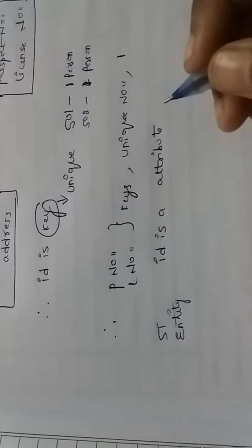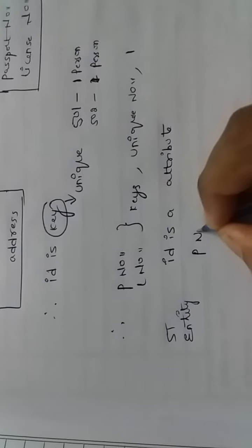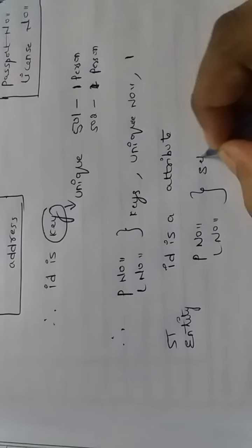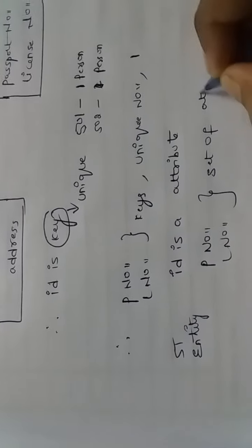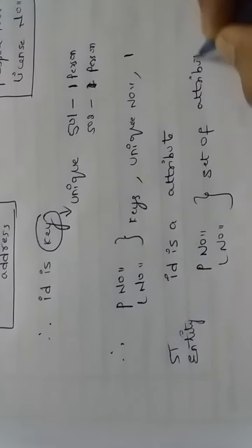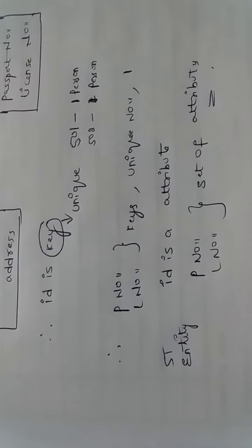Here, ID is an attribute and student is the entity. The student table is the entity. ID is the attribute, and passport number and license number are both a set of attributes. I will continue in the next video.